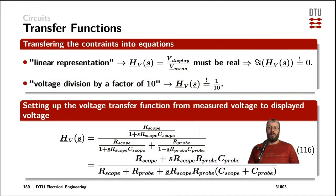Let's start out with transferring those requirements into actual equations with the linear representation meaning here that the transfer function of the display voltage divided by the measurement voltage must be real and you don't want to have any imaginary part. So the imaginary part of that transfer function needs to be 0. And furthermore, the voltage division by a factor of 10 means that at any given frequency, we want that transfer function to be 1 over 10.